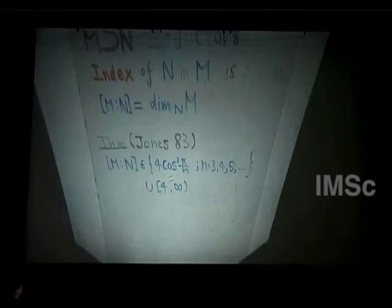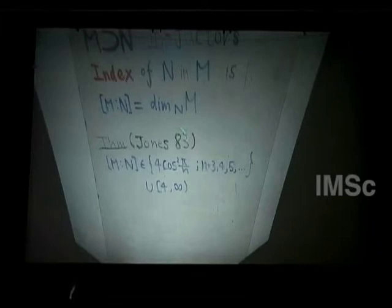Jones showed the following very striking result: this index number belongs either to the discrete series {4cos²(π/n) : n ≥ 3} or to the continuous series [4, ∞). From just the definition, you would never expect this kind of restriction — but he showed it. This is really a mysterious discrete series.